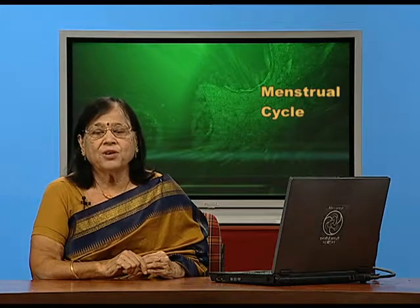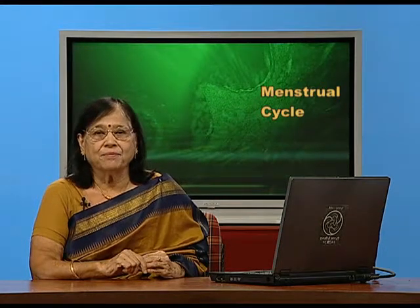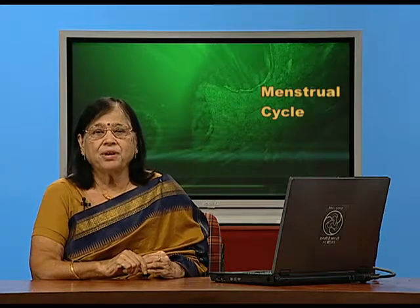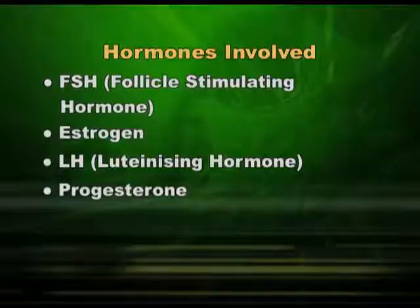LH is also not available because ovulation already took place, and progesterone is not available because the corpus luteum has disintegrated. So all four hormones are absent, the field is clear, and bleeding takes place — because there is no progesterone to hold the blood-filled uterine endometrium that was prepared as a cushion for the fertilized egg that did not come. This endometrium sloughs off as bleeding for four days, and then the next cycle begins again with FSH, estrogen, LH, and progesterone.